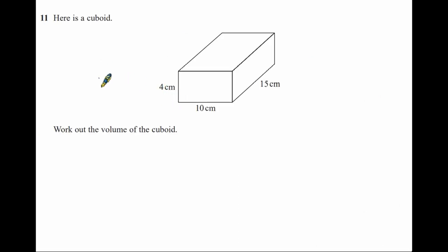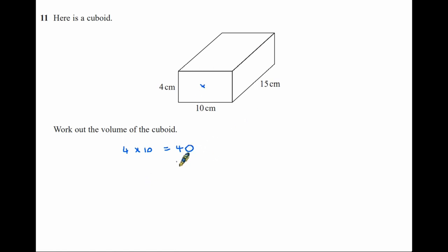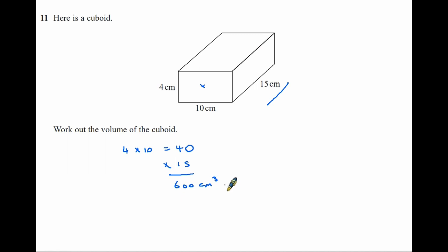Question 11: work out the volume of the cuboid. First, work out the area at the front: 4 times 10 equals 40 centimetres squared. Then multiply by the length of the cuboid, which is 15. 40 times 15 is 600 — and because it's volume, the answer is 600 centimetres cubed.